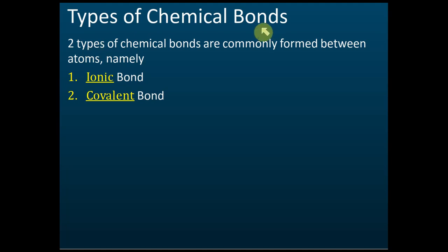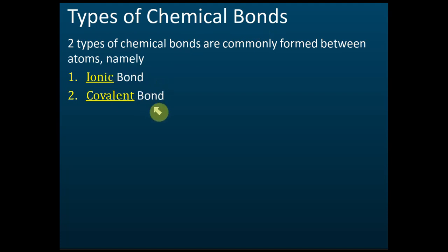Types of chemical bonds formed — due to receiving, donating, or sharing electrons. There are two types of chemical bonds: one is called the ionic bond and the second one is called a covalent bond. The ionic bond is formed by ions — positive and negative ions. Covalent bonds form by sharing electrons; there's no charge, they just share electrons.